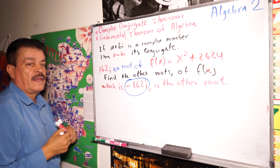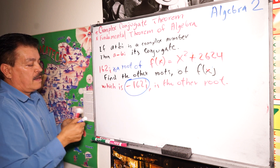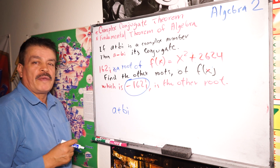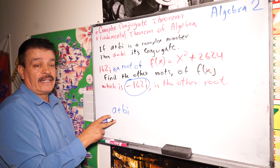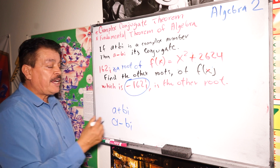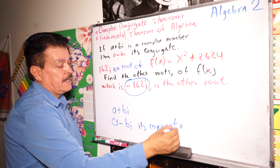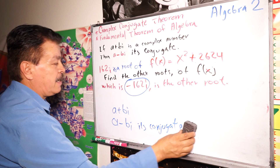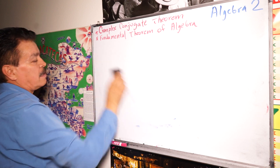Why? If a plus bi is a root of a polynomial with real coefficients, then a minus bi is its conjugate. That's why it's a very simple topic.